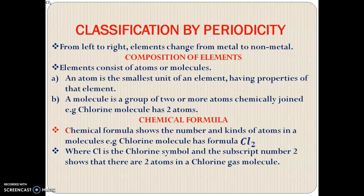Now what is the composition of elements? What really makes up elements? Elements are made up of atoms or molecules. An atom is the smallest unit of an element having properties of that element, while a molecule is a group of two or more atoms chemically joined together.